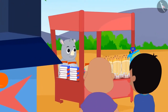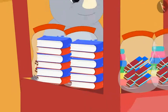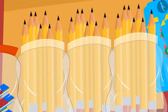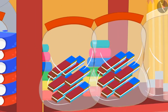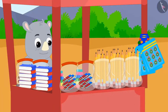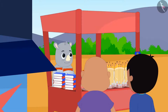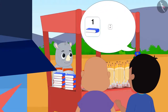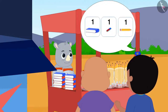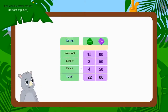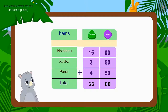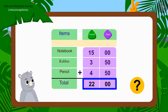Raju and Bablu have come to Gaggu's shop to buy notebooks, pencils and some other items. Raju asked Gaggu for one notebook, one rubber and one pencil. Gaggu added the value of all three items in this way. Children, tell me if Gaggu's addition is correct.